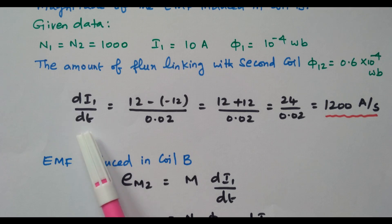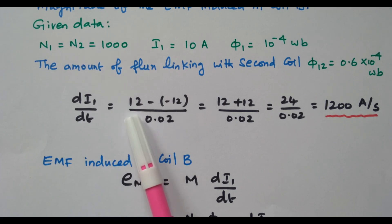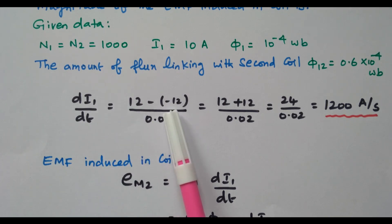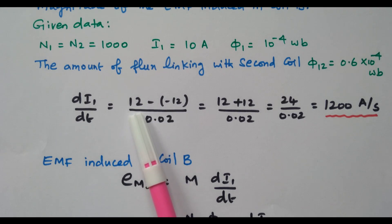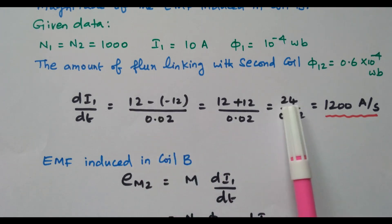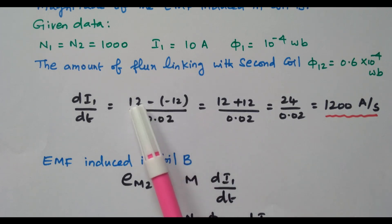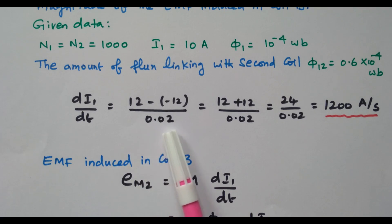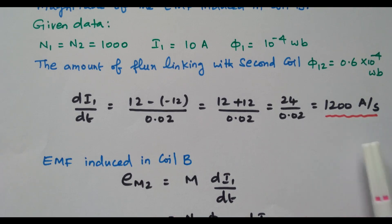Now we find di₁/dt. The current changes from plus 12 to minus 12 ampere. The change in current is 12 − (−12) = 24 ampere. The time is 0.02 seconds. So di₁/dt = 24 / 0.02 = 1200 ampere per second. This is the rate of change of current in coil A.